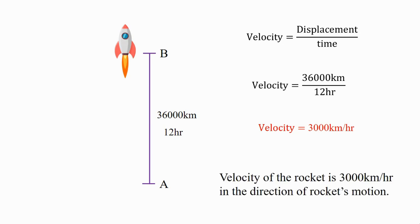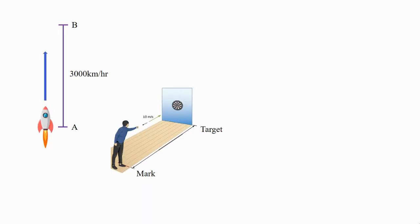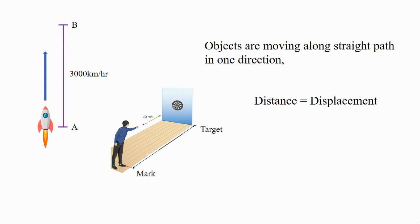Velocity of the rocket is 3,000 km per hour in the direction of the rocket's motion. In these pictures, objects are moving along straight path in one direction. We already learned that when objects move along in one direction, distance covered by an object is equal to its displacement.